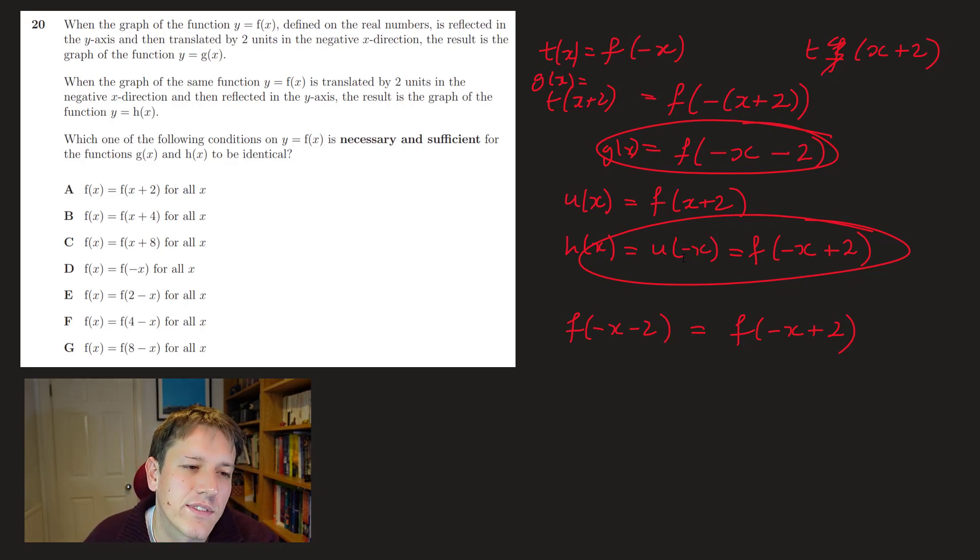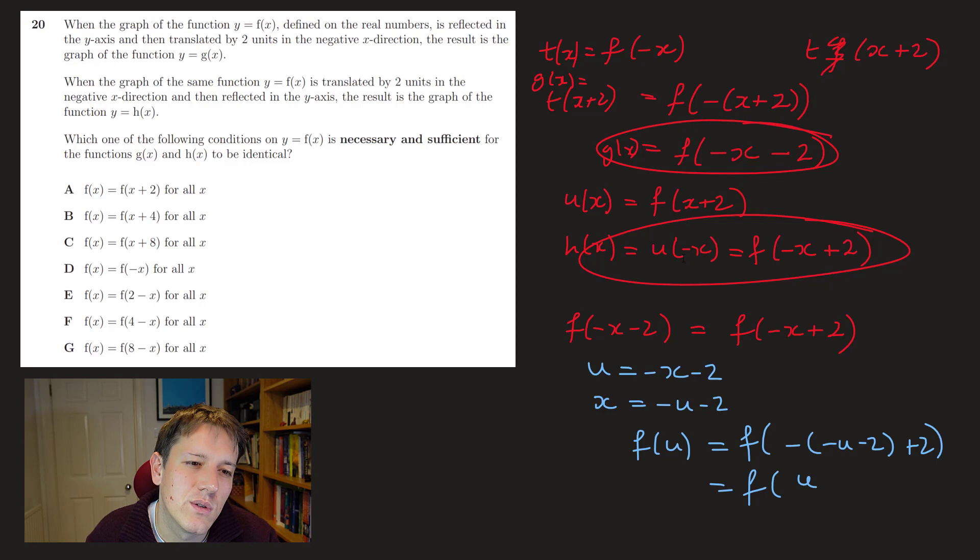So let's make it so the left hand side is x here, so if I make, let's replace, so I want to make this just x, or maybe I'll make it u or something actually, that would be less confusing, so let's just make u equals minus x minus 2, so effectively here I'm writing x equals minus u minus 2, and substituting that in here, so that will give me f of u, and I have to do the same over here then, I'm going to get minus minus u minus 2 plus 2, so that's f of minus minus u is u, and then plus 2 plus 2, so f of u plus 4.